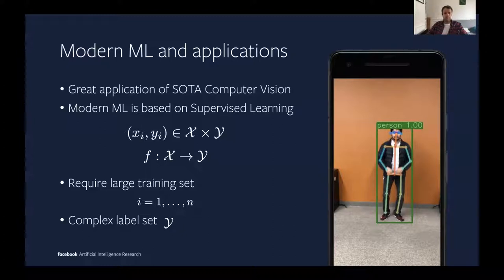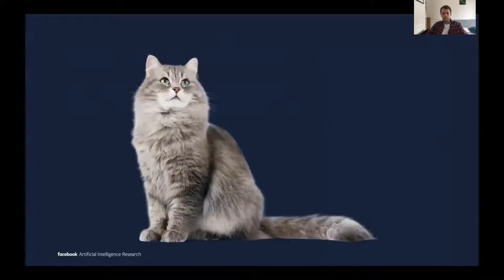This requires a large annotated set — N is large. The label set Y can be pretty complicated. In the case of classification, the label set is usually binary with 0 and 1. Let's look at a picture of a cat. The question in cat classification is to give a label of 0 or 1 depending on whether there is a cat in the picture. In this case it's simple — you just say 1, this is definitely a cat.